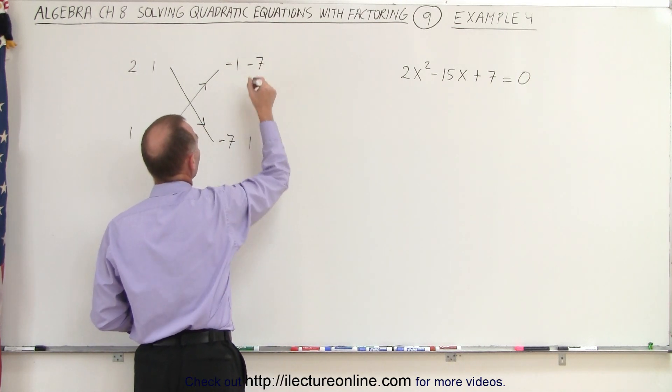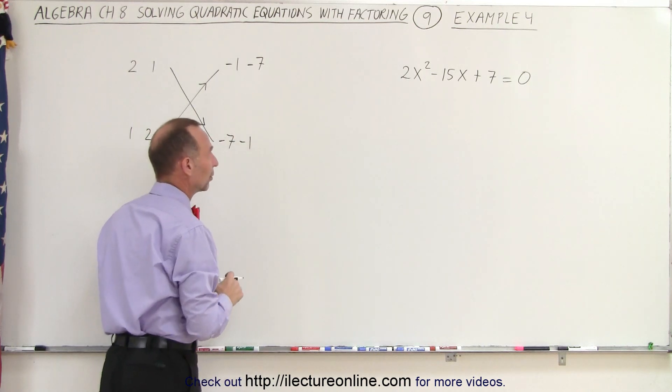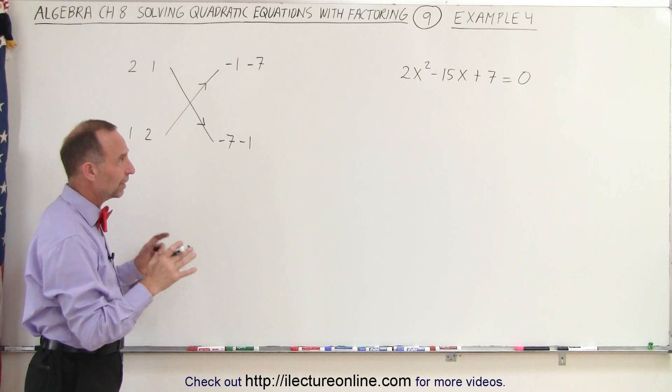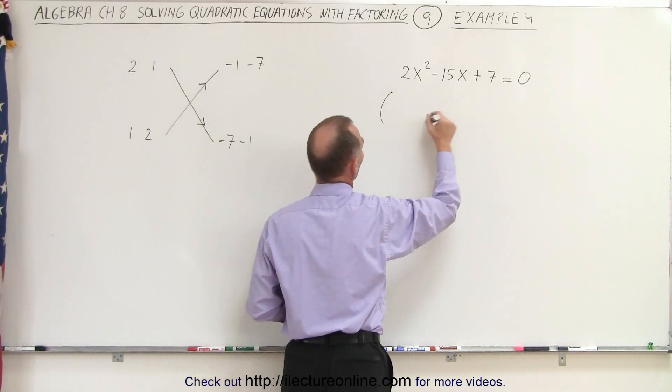So it must be negative 1, negative 7 in that particular combination, one or the other. So now, what combination will give us the correct factored form?